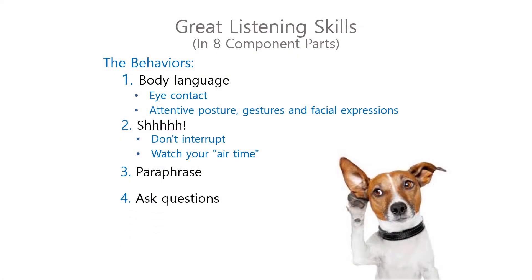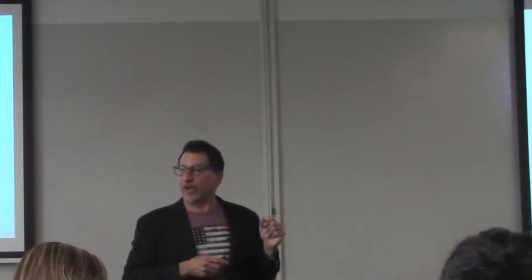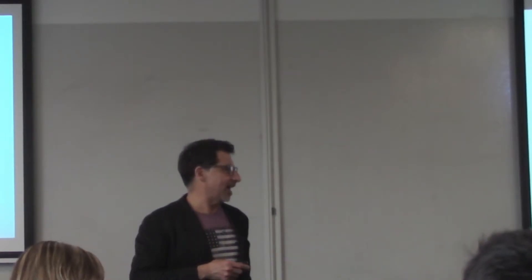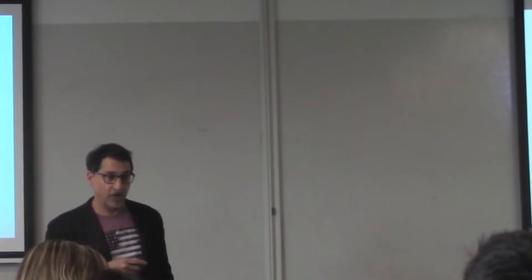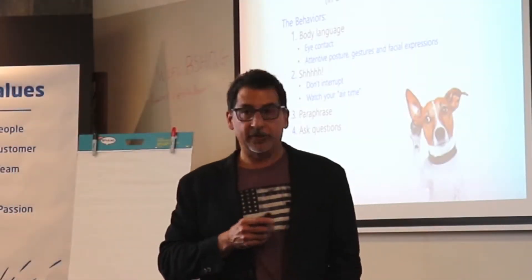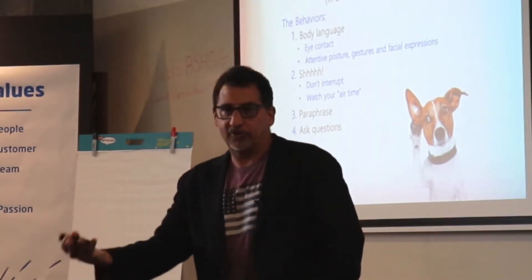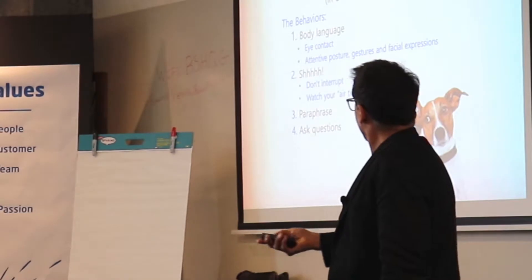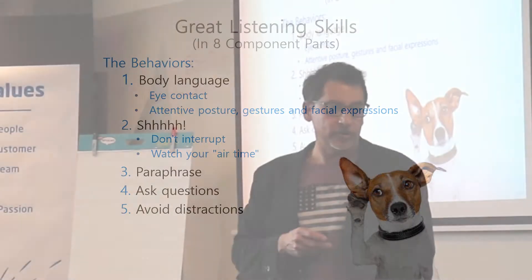Number four: asking questions. I have a high school friend who comes through once a year and we talk about him for two hours — his life, his kids, his family, his job. We never talk about my life because he never asks a question. I ask questions, he doesn't. He buys the beer, so I show up. Number five: avoid distractions. Put away your phone or whatever you think you can multitask with.